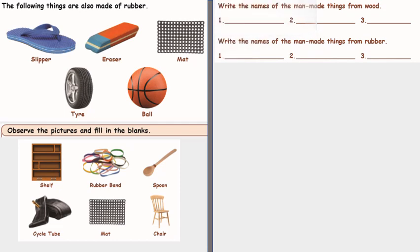Observe these pictures and fill in the blanks. Now here are the pictures given and we have to write the name of the manmade things which are made from wood first like shelf, spoon and chair. Then write the names of the manmade things from rubber like rubber band, mat and cycle tube.